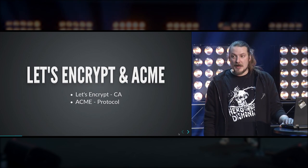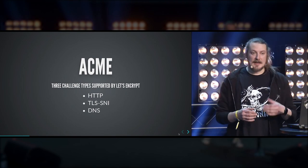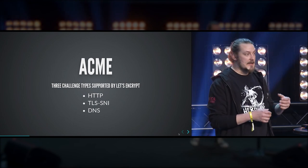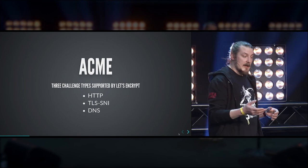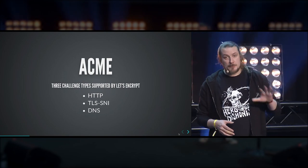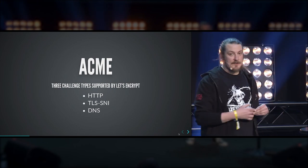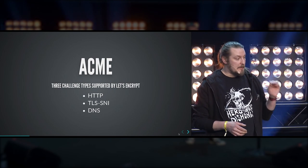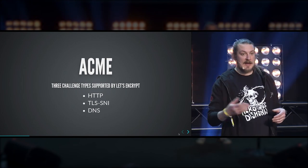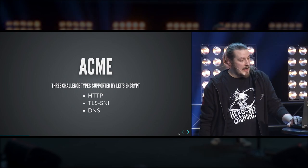First, about ACME. There are three challenge types. A challenge is when the CA requests the client to validate its ownership over the domain. The first type is HTTP, which requires the client to plant a distinct challenge validation token in the web root of the domain, which the CA will then fetch. If it's correct, the certificate can be issued.